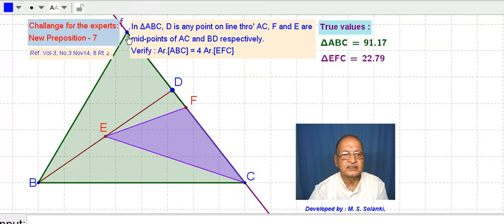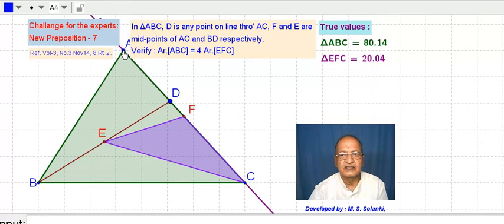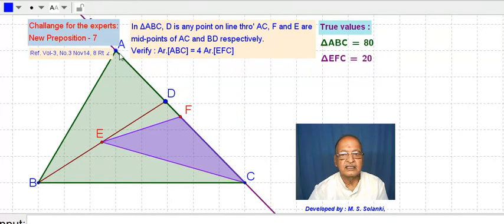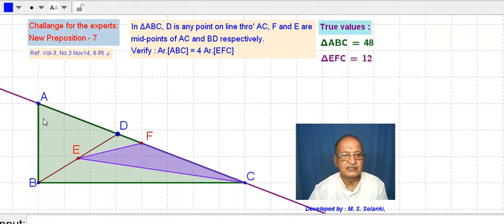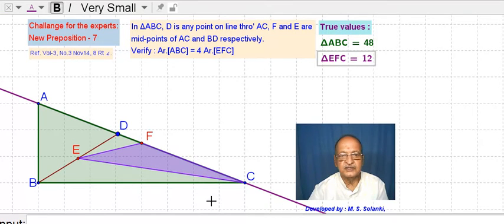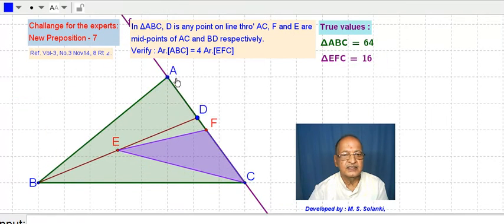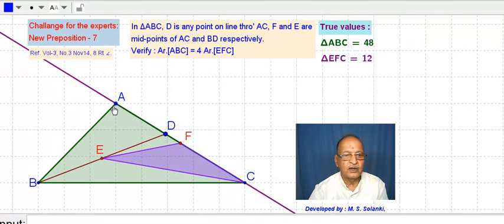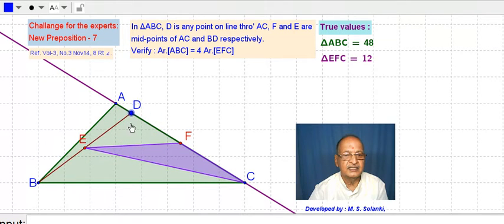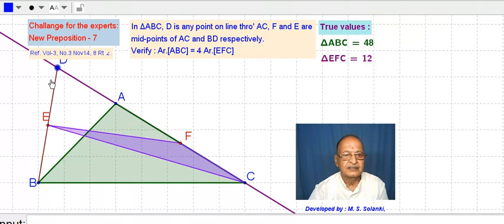Because triangles on the same base and between the same parallel lines are having equal area. Now I am changing to some other position. Let us say here 80. You are getting at this distance it is 48.